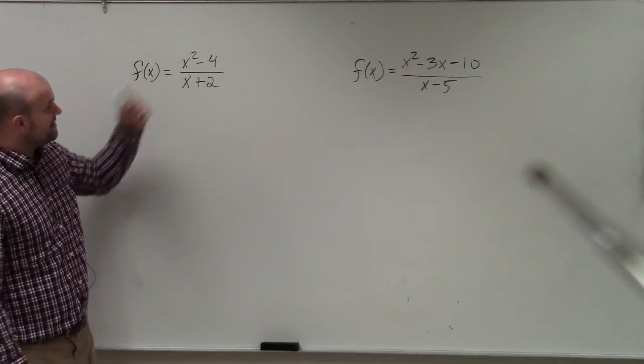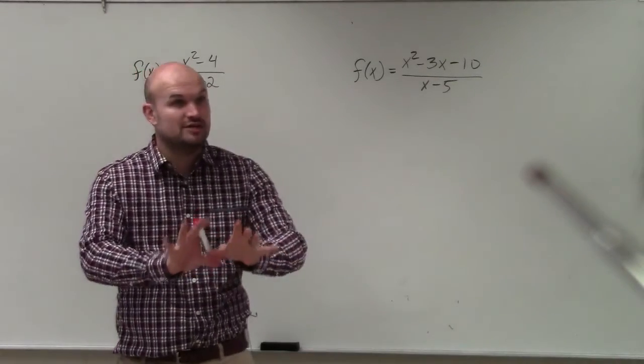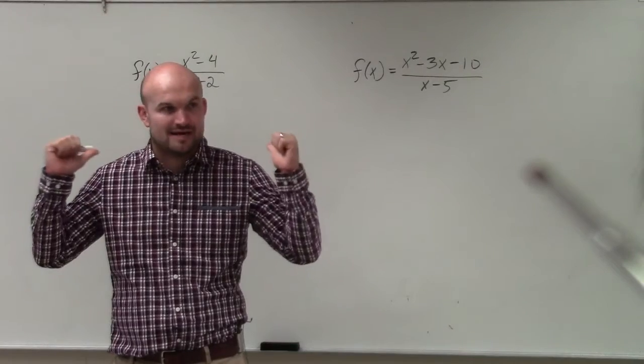So you can see here, we have x squared minus 4 divided by x plus 2. Now, automatically from talking about domain, we know that what number can the variable not equal in the denominator?